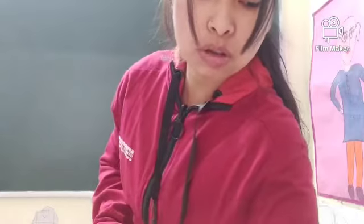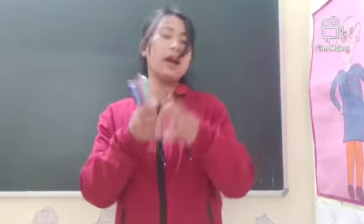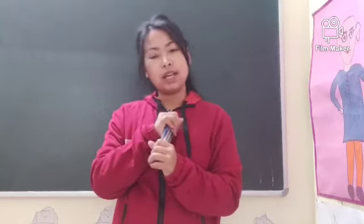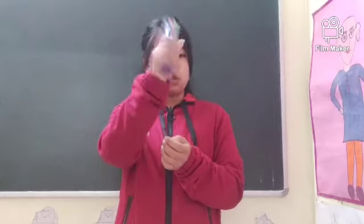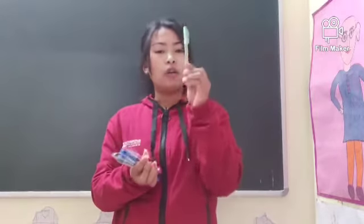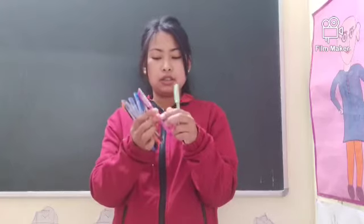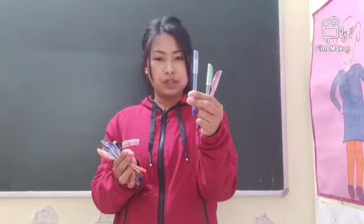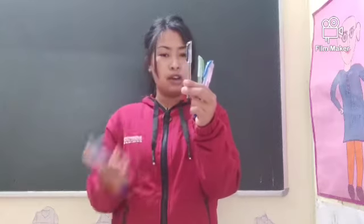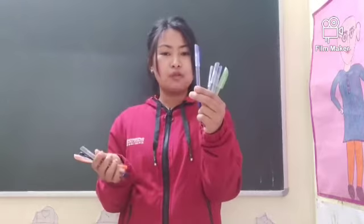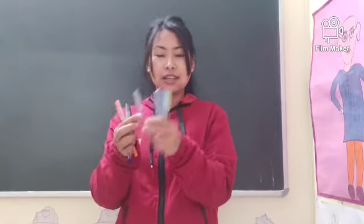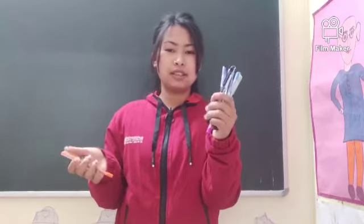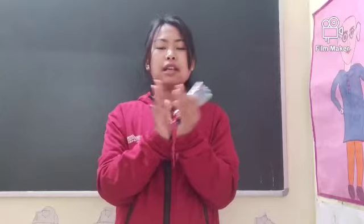Ma'am ke paas kitne flashcards hain, children? Five. Now ma'am aapko next objects dikhayin gi — pen. Okay? Ma'am ke paas kya hai? Pen. Aapko is ko one by one count kari ghi. Counting ke saad haam is pen ko learn kari ghi. So: one, two, three, four, five, six, seven, eight. Clap for yourself! These are eight pen.